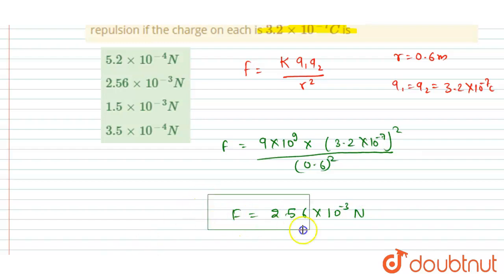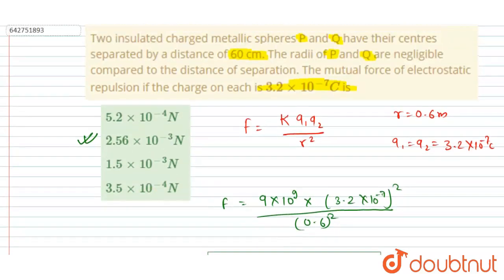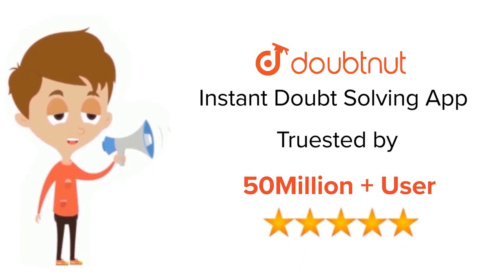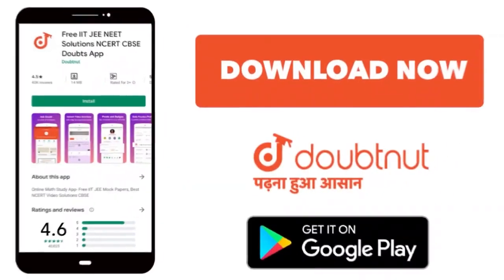Now you can match the correct option. B is the correct option: 2.56 times 10 to the power minus 3 newtons will be the force on the two charges. Thank you. For class 6 to 12, IIT, and NEET level, trusted by more than 5 crore students, download Doubtnet app today.